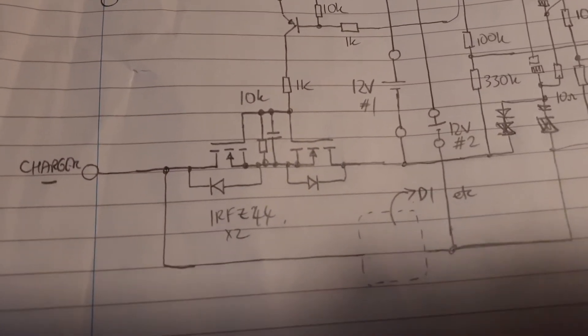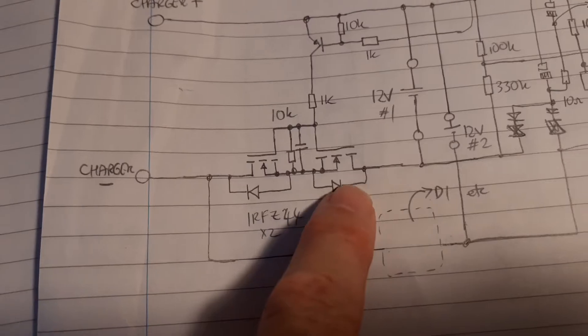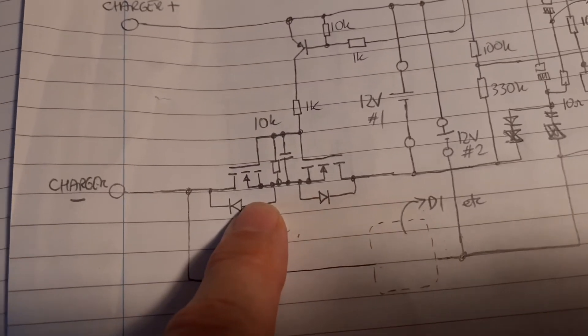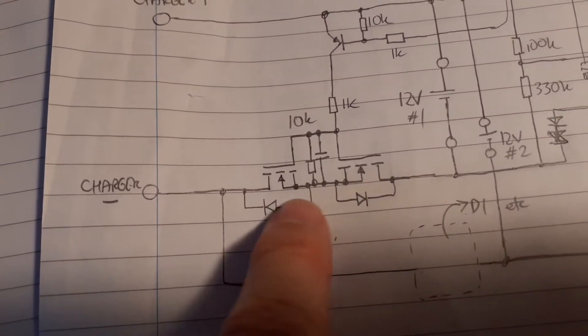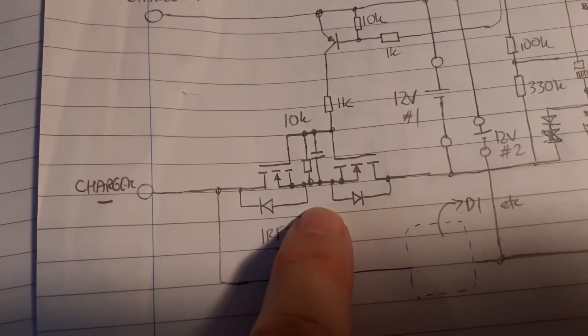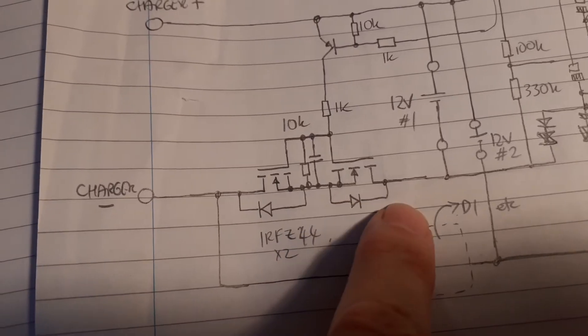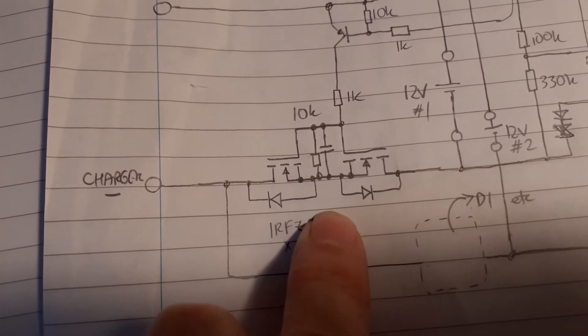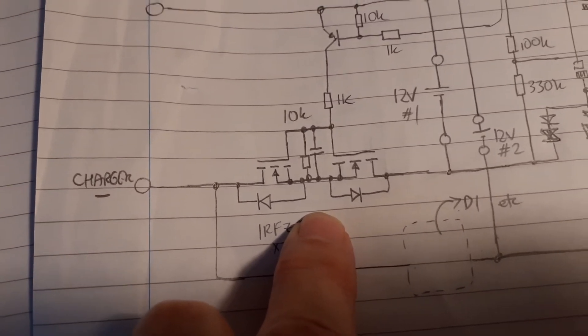So then I went for a second version, which involved using two MOSFETs. This apparently is a fairly recognized technique. We put two MOSFETs with the sources connected together and control them both, switch them on at once, which means that the body diodes are in reverse polarity, so there's no current at all when they're switched off.